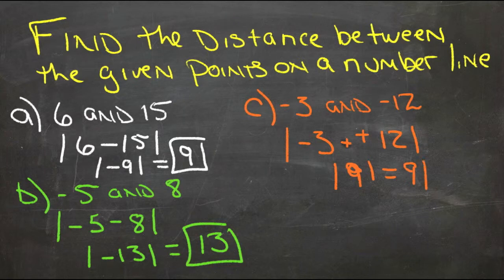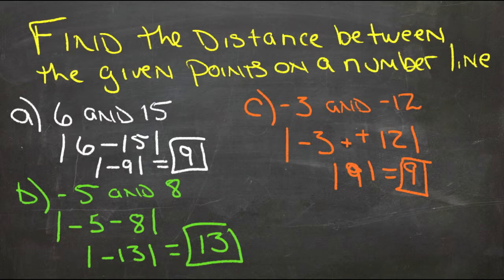So it's 9 steps between negative 3 and negative 12 on the number line. We'd be starting at negative 3 and hopping backward until we got to negative 12.